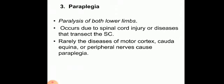The third category is paraplegia — paralysis of both lower limbs. Paraplegia is normally seen when there is spinal cord injury or any disease basically transecting the spinal cord. Very rarely, disease of the motor cortex, peripheral nerves, or cauda equina can cause paraplegia. The most common cause is complete transection of the spinal cord from injury or disease.